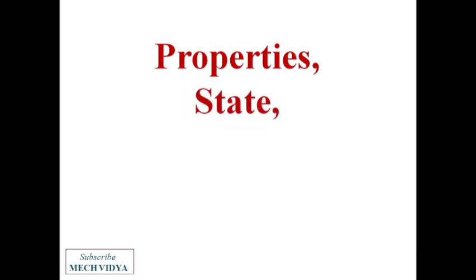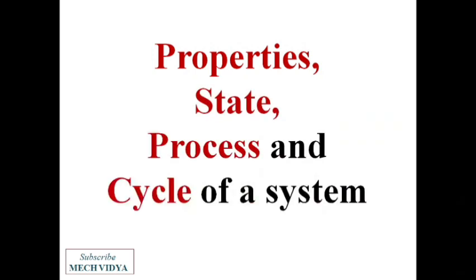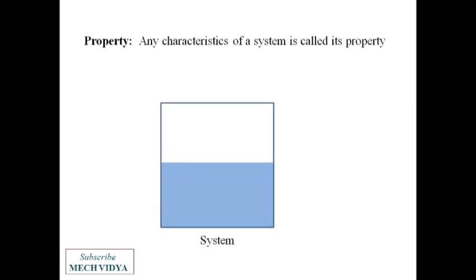In this video we will learn about the thermodynamic state, properties, process, and cycle. All the measurable characteristics of a system are known as the properties. Properties of a system are those quantities that help us describe the state of a system. Examples of some properties are pressure, volume, temperature, density, etc. and the state of a system is the condition of a system at a particular time frame.